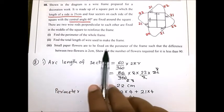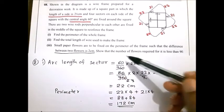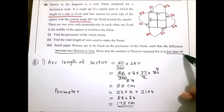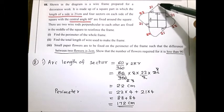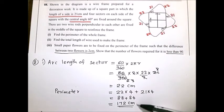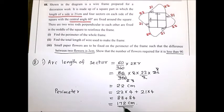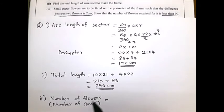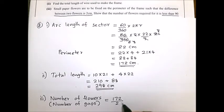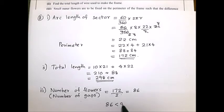Third part: small paper flowers are to be fixed on the perimeter of the frame such that the gap between two flowers is 2 centimeters. Show that the number of flowers required is less than 90. The perimeter is 172 centimeters. To find the number of gaps, divide 172 by 2 equals 86. This equals the number of flowers. Since 86 is less than 90, the statement is verified.